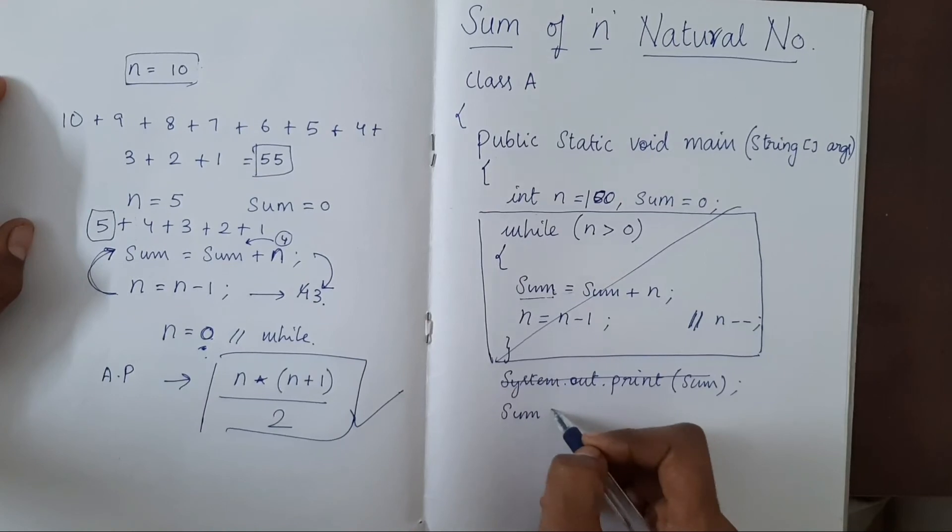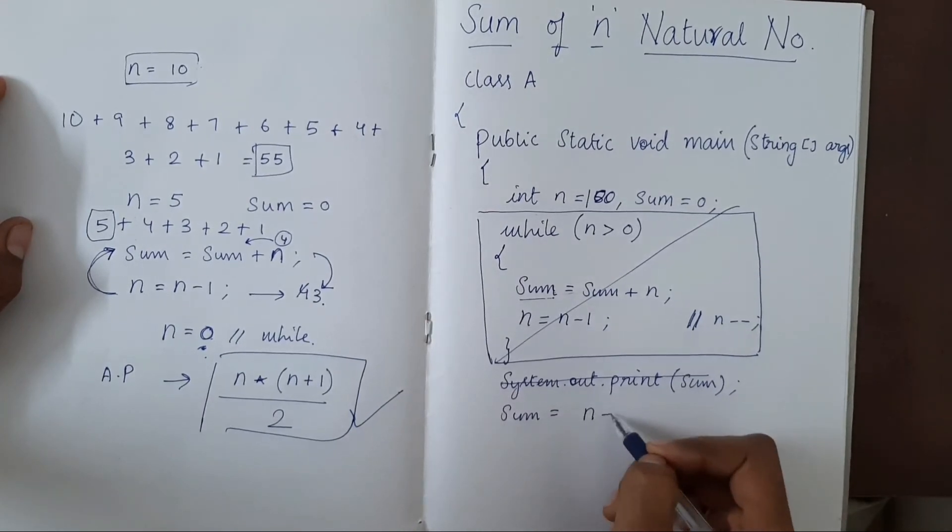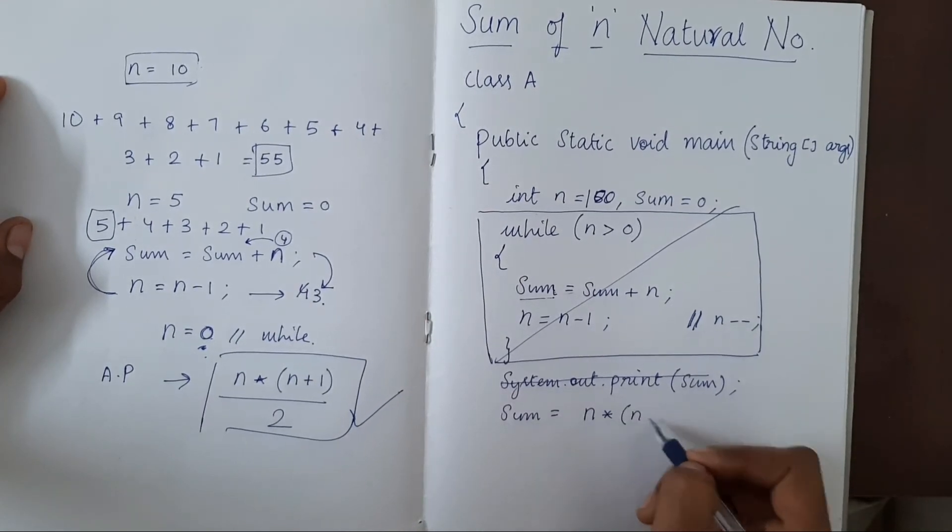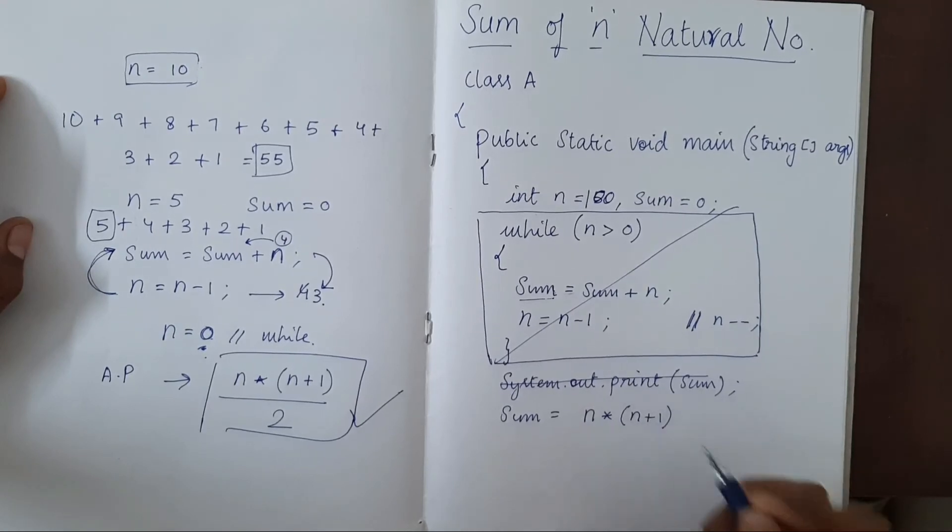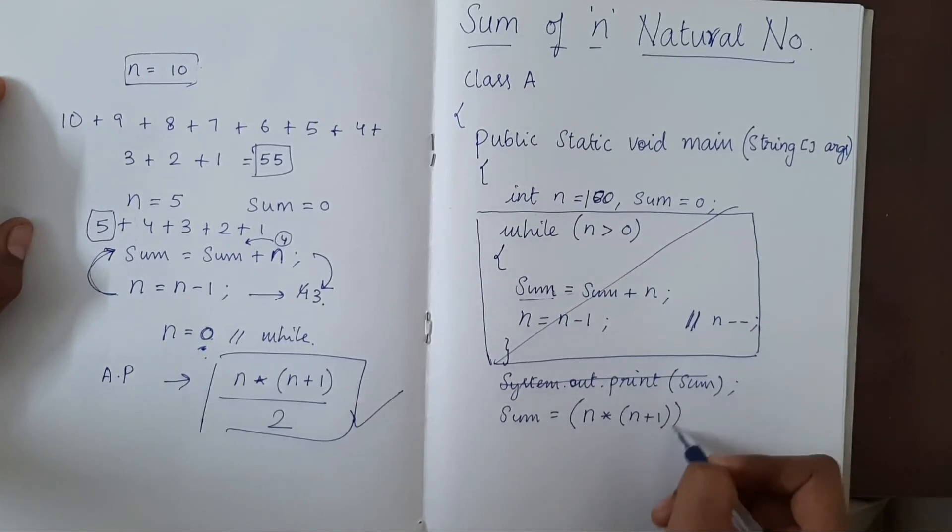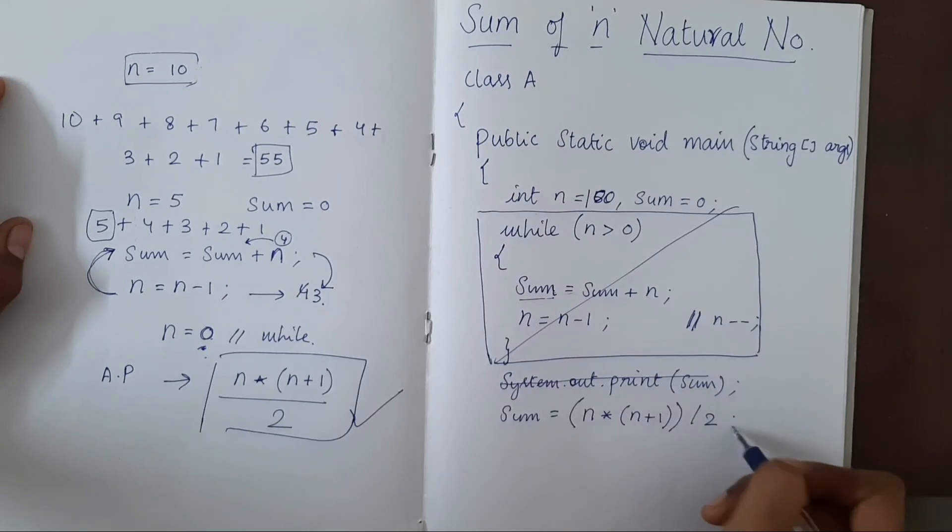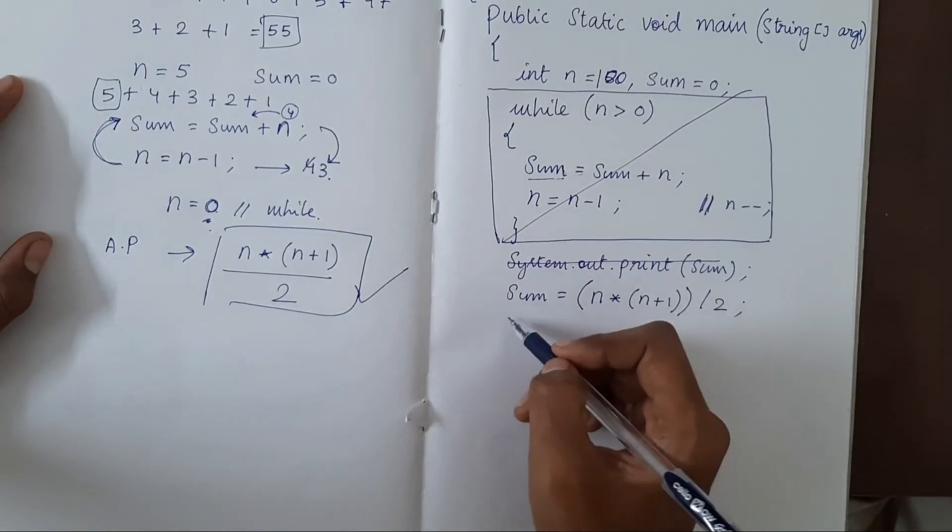sum equal to n into n plus 1, whole divided by 2. And then we will print it.